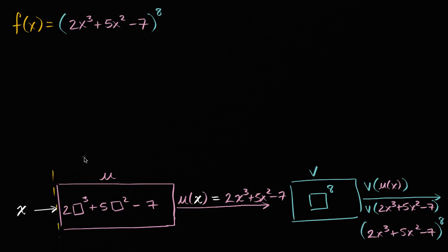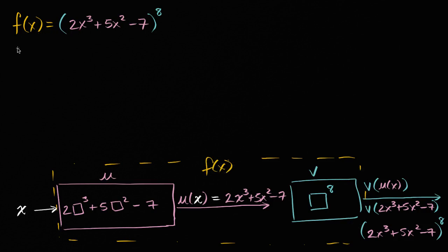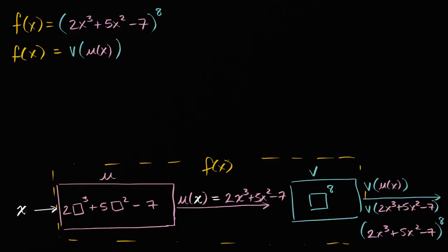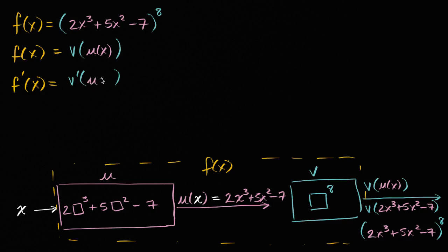And that's what f of x is. So as we just saw, f of x can be viewed as the composition of v and u. If we write f of x being equal to v of u of x, then we see very clearly the chain rule is very useful here. The chain rule tells us that f prime of x is going to be v prime of u of x — the derivative of v with respect to u — times the derivative of u with respect to x, so u prime of x.